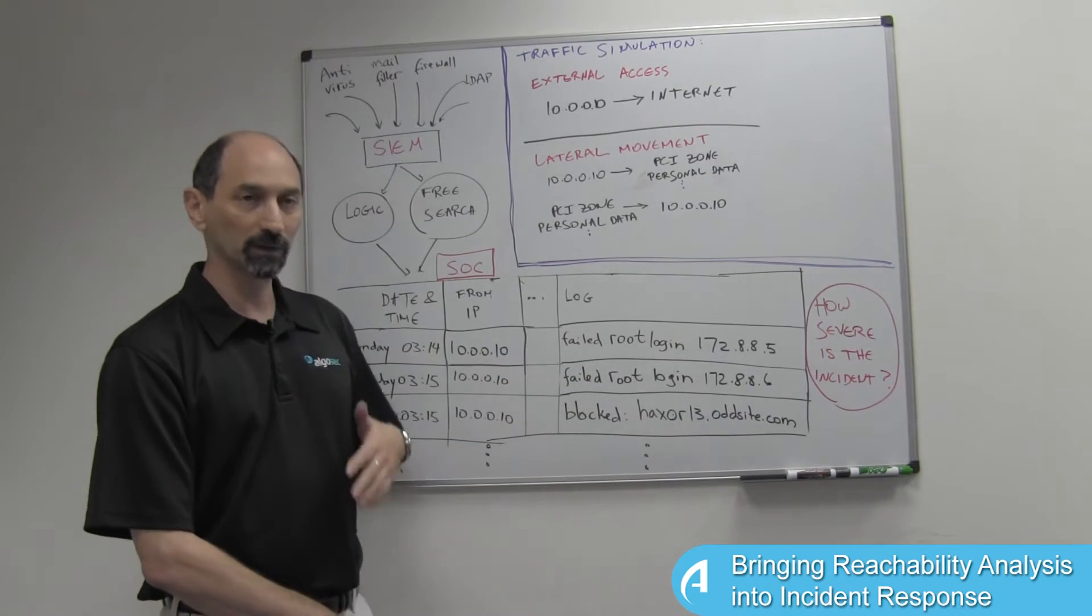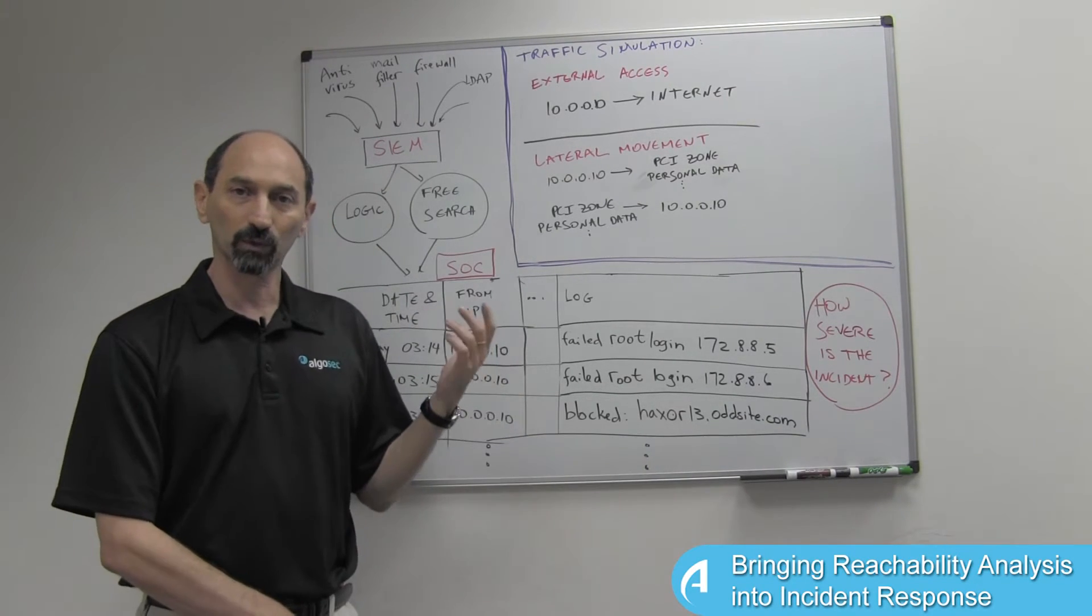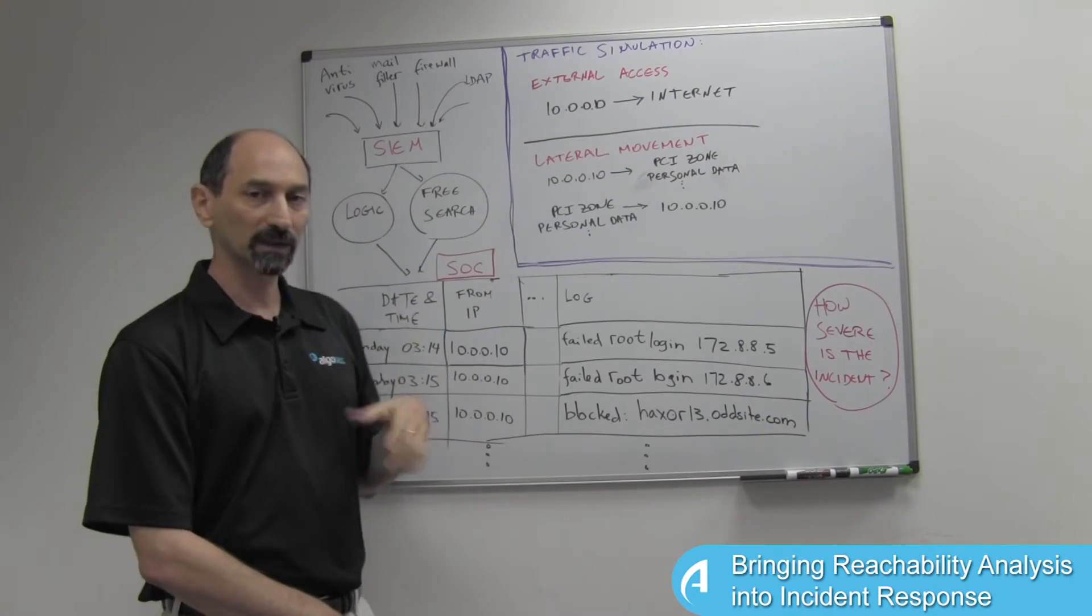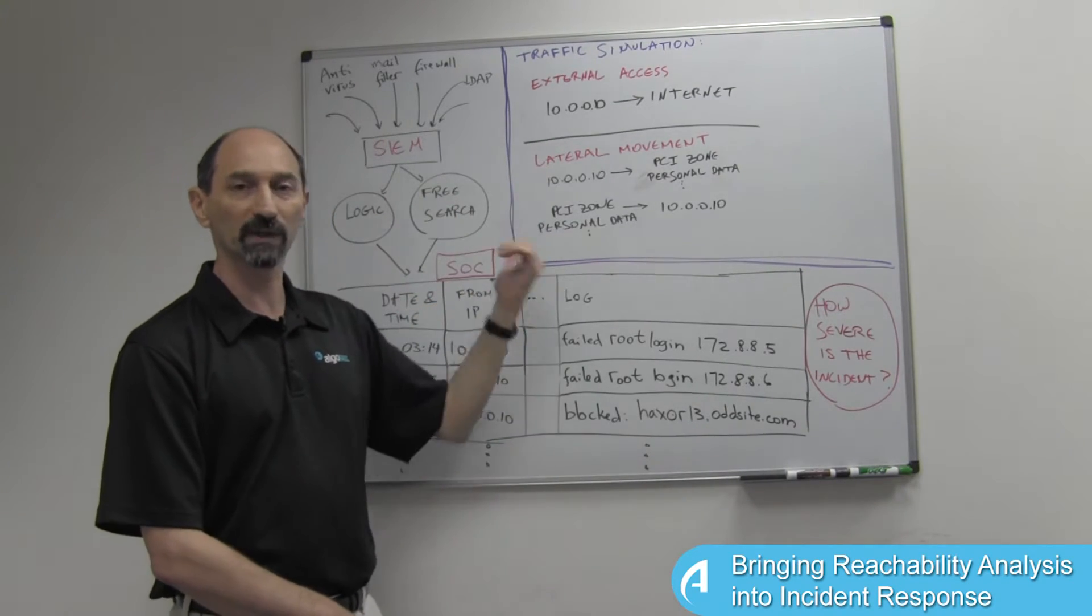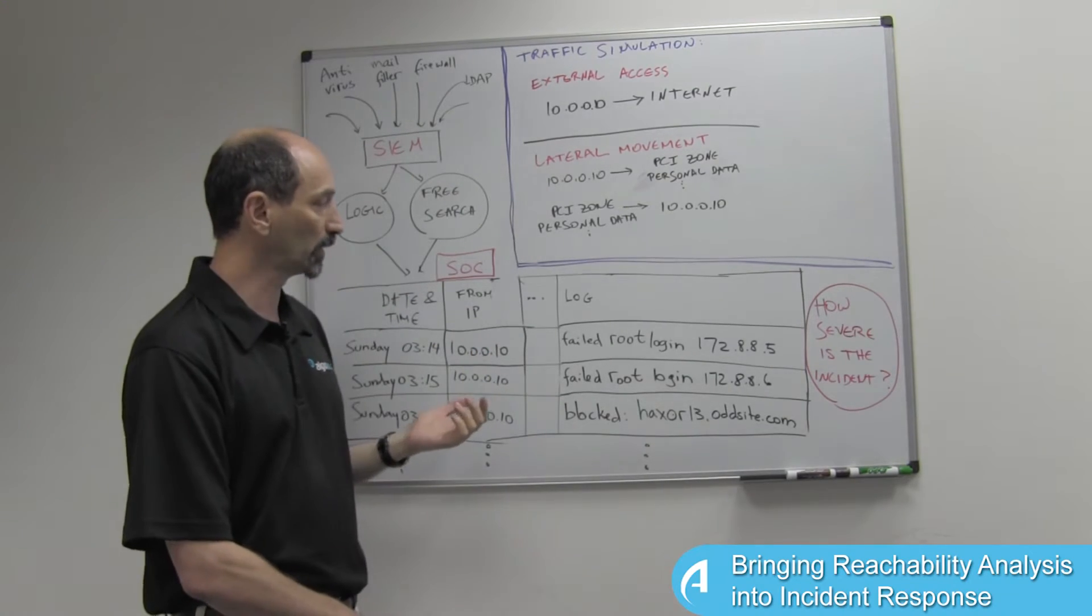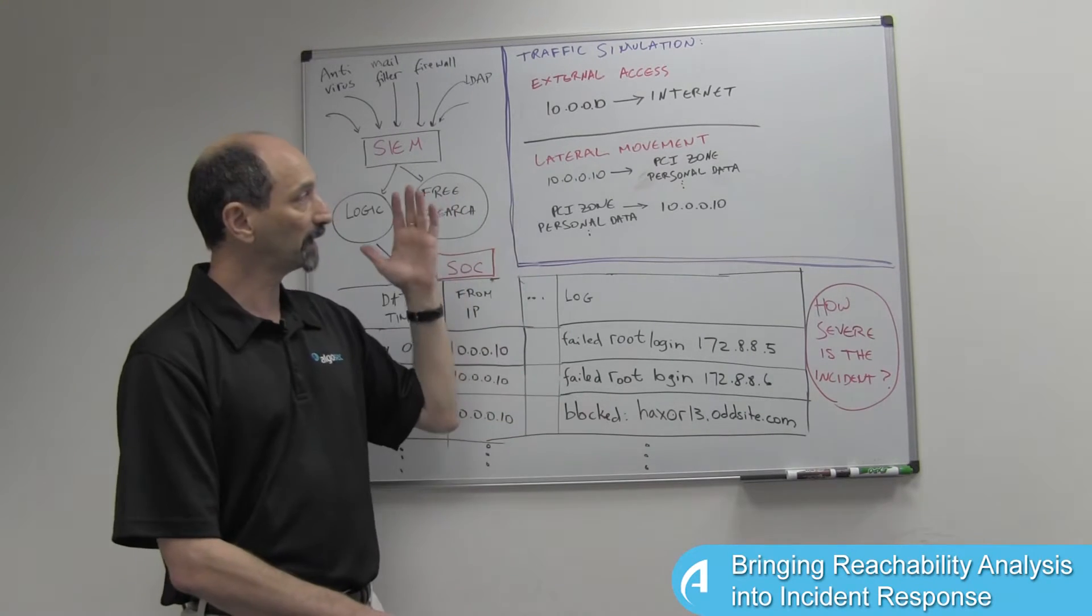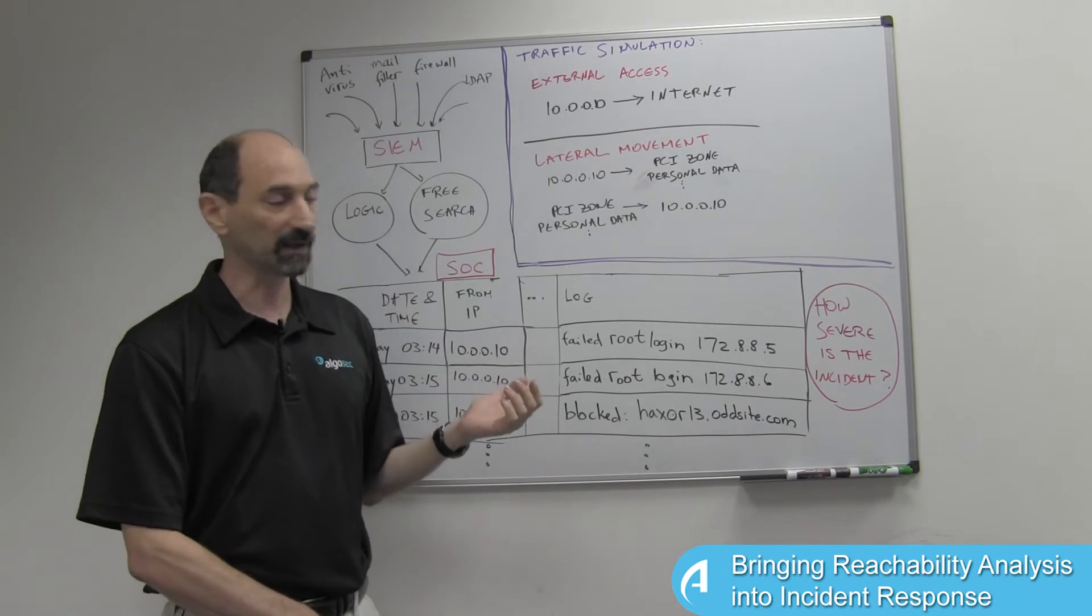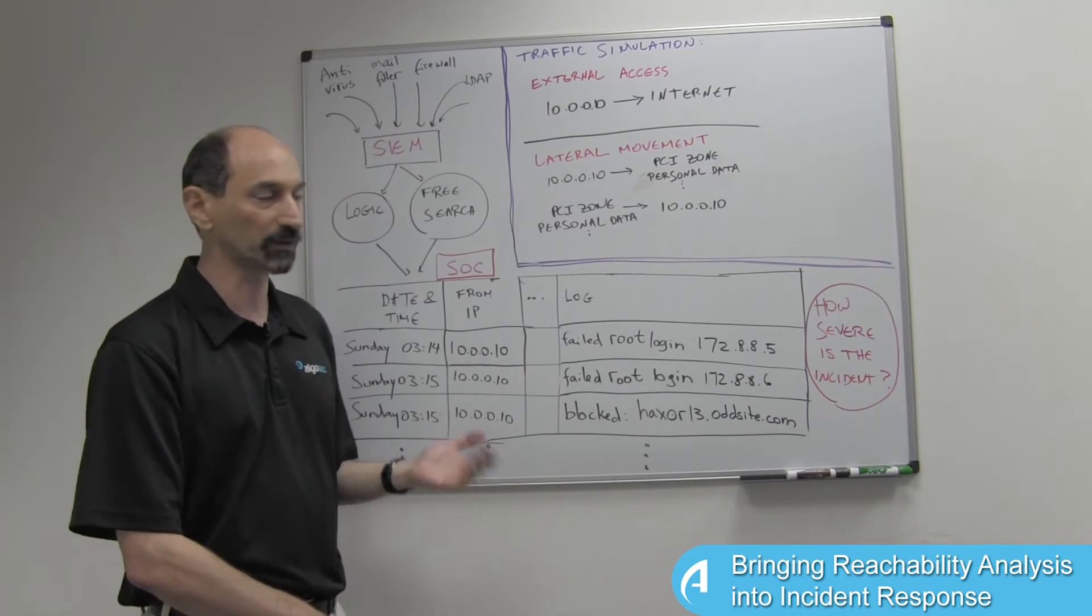If we want to enrich our understanding of the severity of the threat, one system or tool that we can use is traffic simulation to try to understand what types of traffic can emanate from the infected server or reach the infected server from various other systems in the world. Based on the patterns of connectivity that are allowed by the network, the routing, and the firewalls surrounding the system, we can identify whether this threat is a high threat, a critical threat, a mid-level threat, etc.